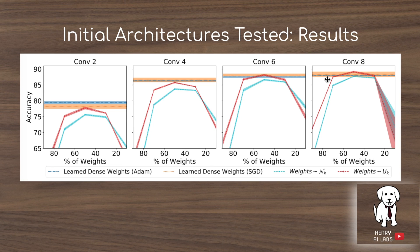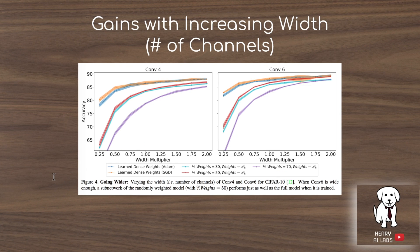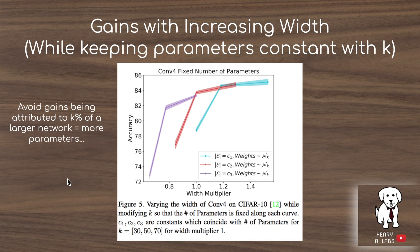As networks get larger, at the eight-layer convolutional network the subnetwork sampled from the Kaiming distribution is able to outperform the optimized network. Increasing the width — number of channels or filters per layer — consistently yields better subnetwork performance, observed in both the four-layer and six-layer convolutional networks. Even when fixing the number of parameters by controlling the k percentage across different width dimensions, the accuracy increase with wider networks persists, suggesting width provides benefits beyond just more parameters.